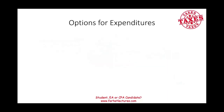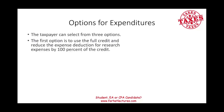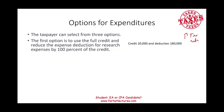What can you do with this research credit? The taxpayer can select from three options. The first option is to use the full credit and reduce the expense deduction for research expenses by 100% of the credit. So you spent $200,000, $20,000 of it goes toward the credit, and you take a tax deduction of $180,000. Remember, a credit reduces your taxes dollar for dollar, while a deduction reduces your taxable income — and the higher your tax rate, the more beneficial the deduction.